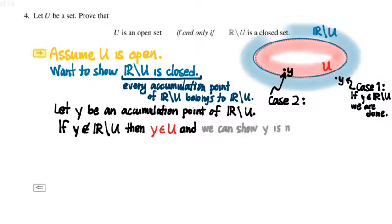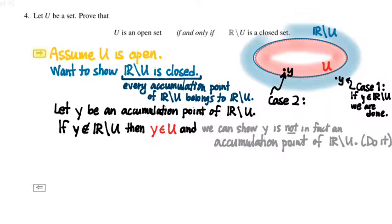So then the task here is to show that Y cannot, in fact, be an accumulation point of R minus U, using the fact that Y belongs to U, which is an open set. So there's the logic for you to fill in.